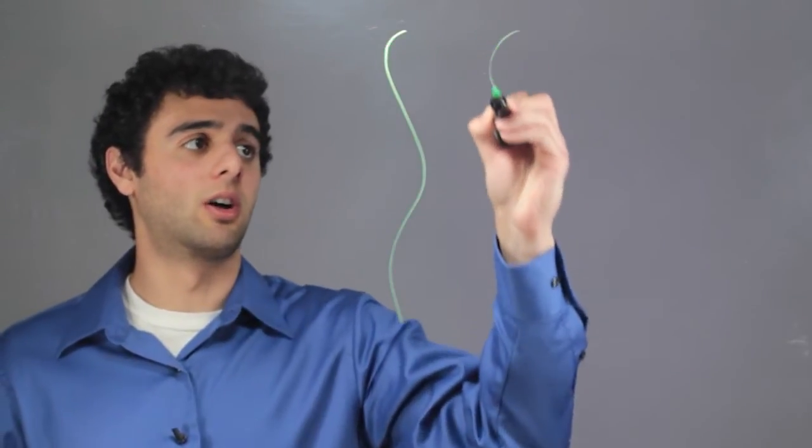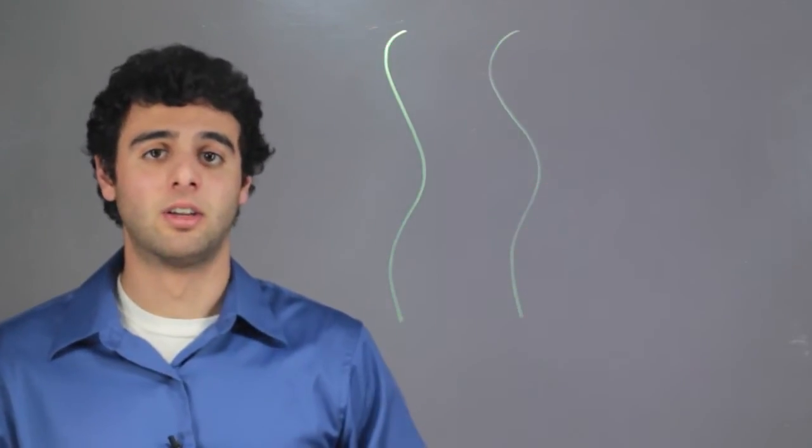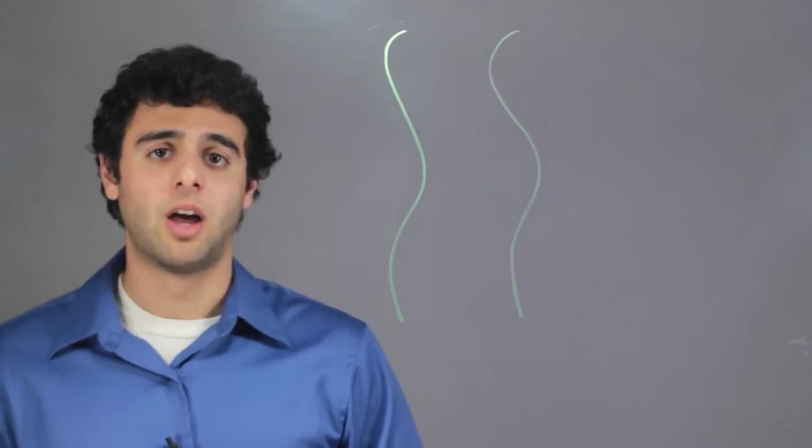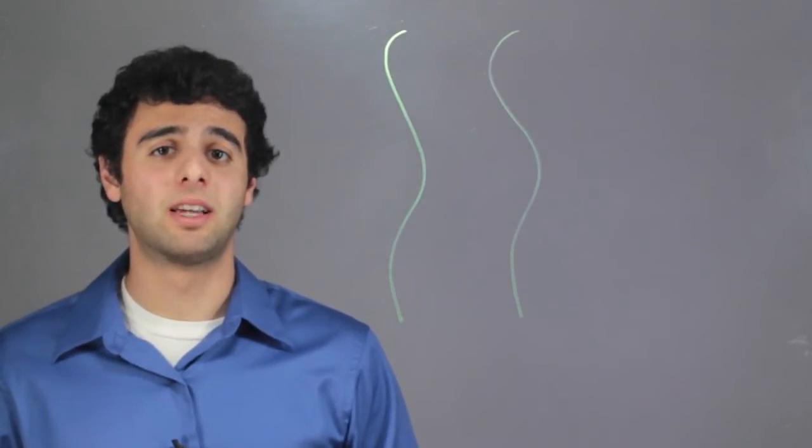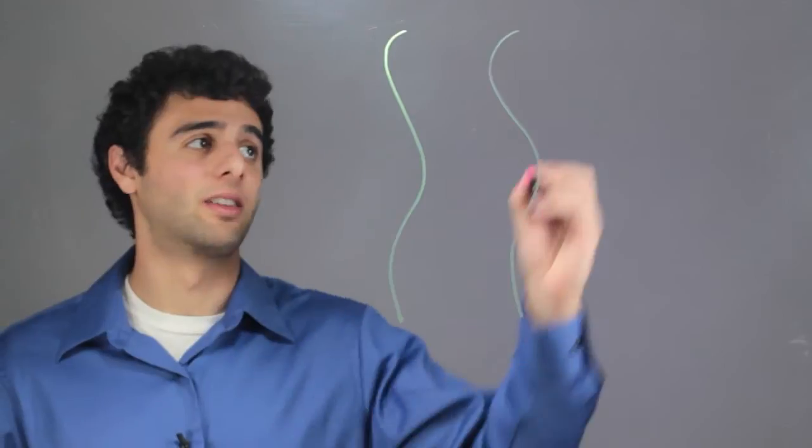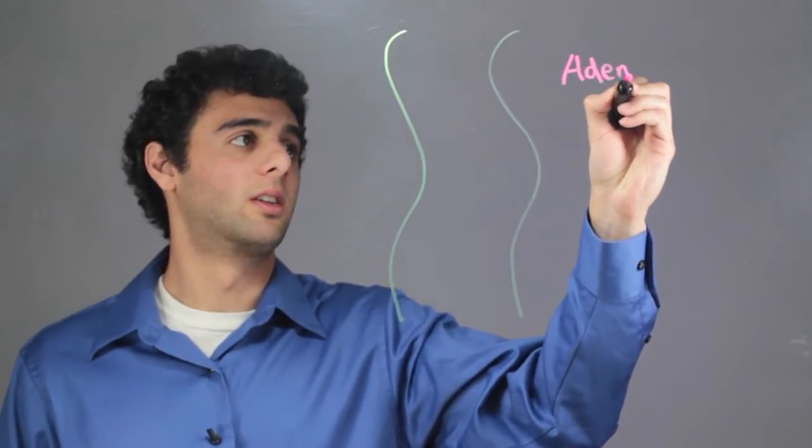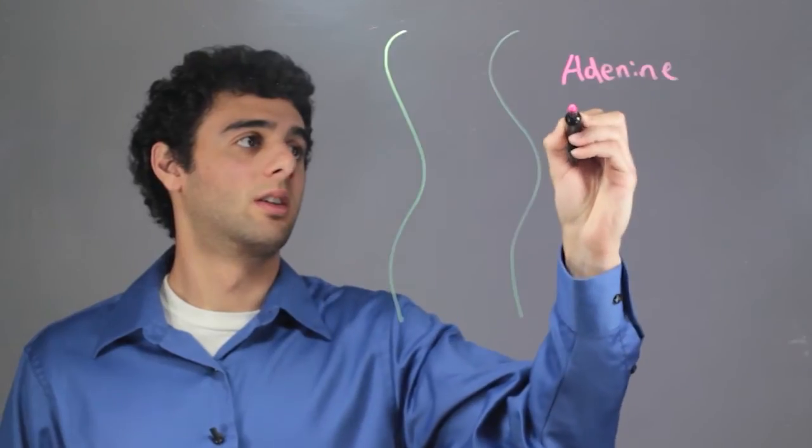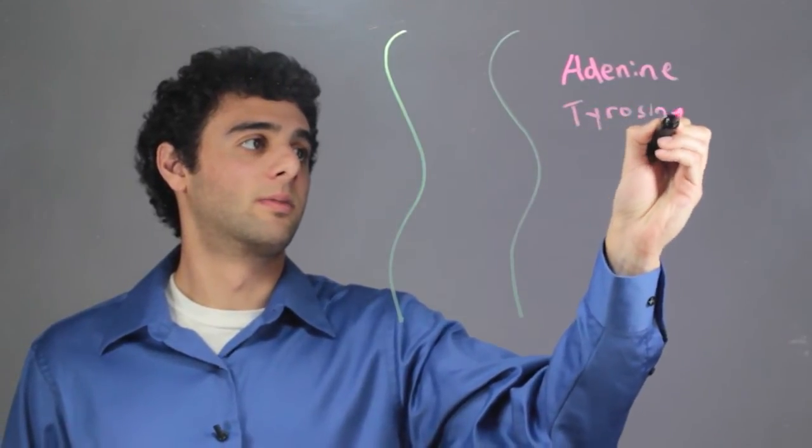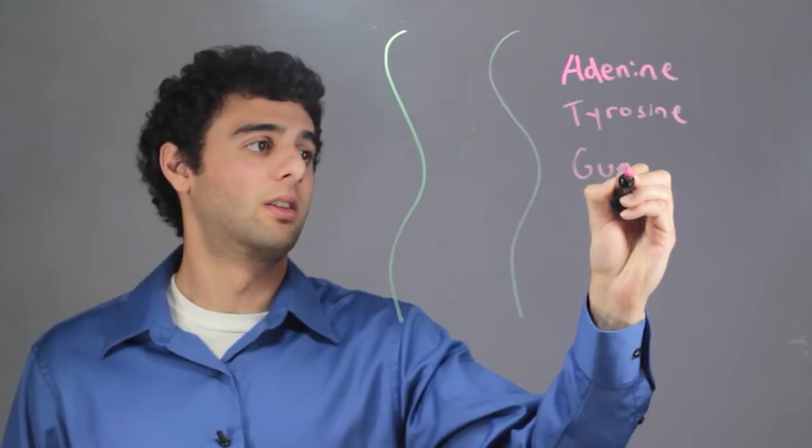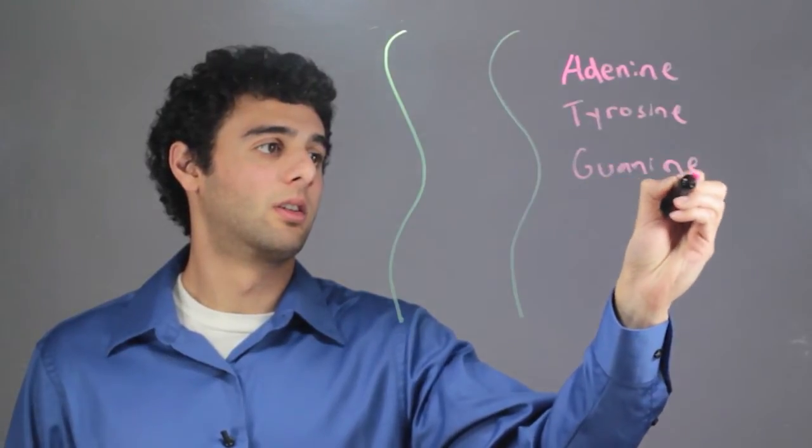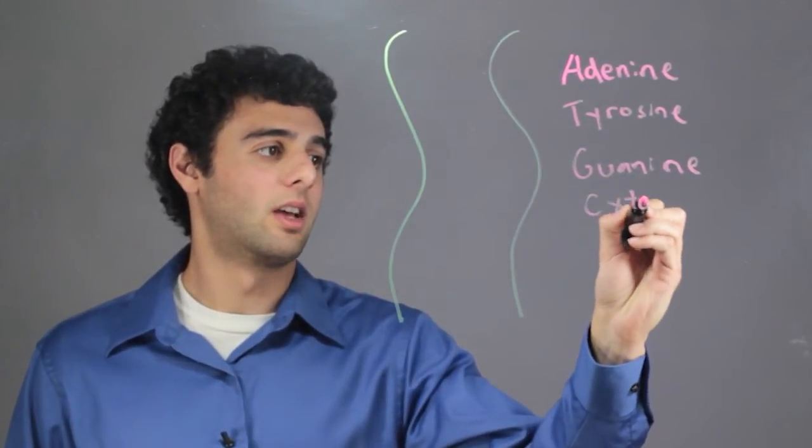So, I'm going to draw two strands of DNA. But before we go into it, I want to discuss the four different bases that are involved in DNA. We have adenine, tyrosine, guanine, and cytosine.